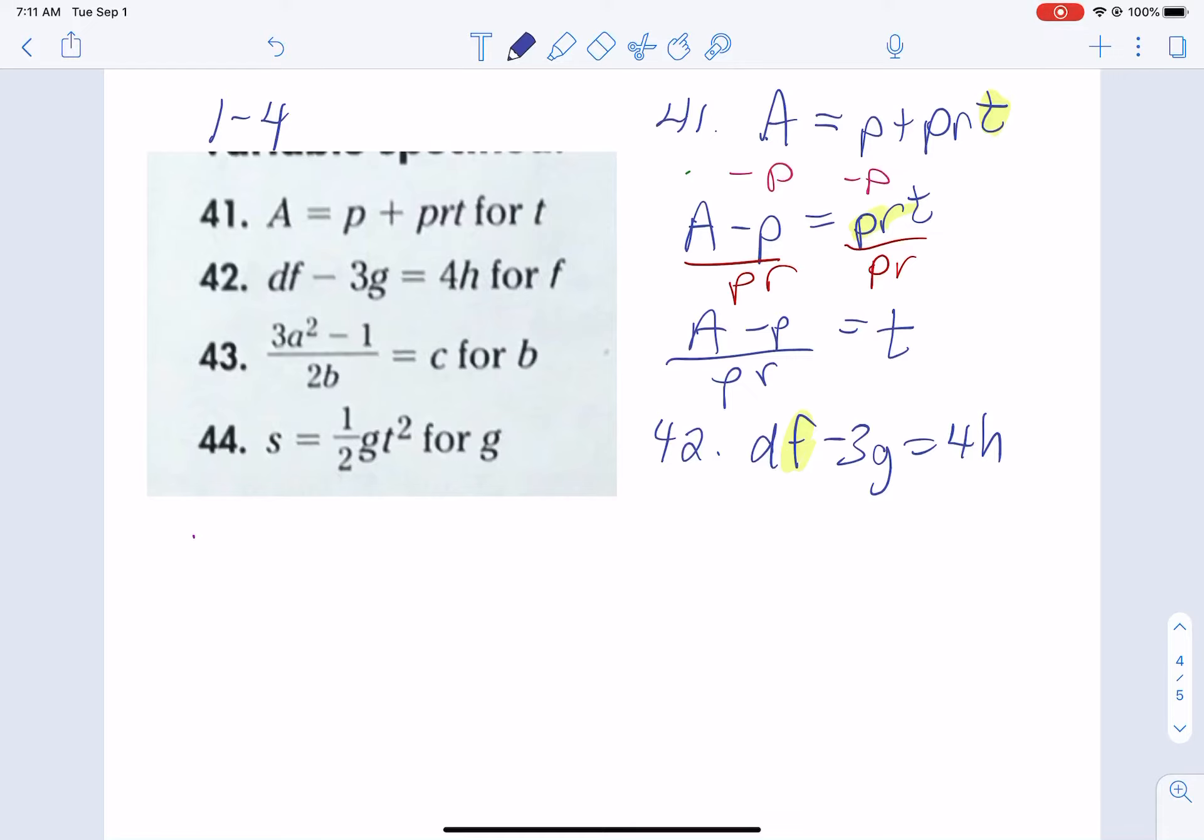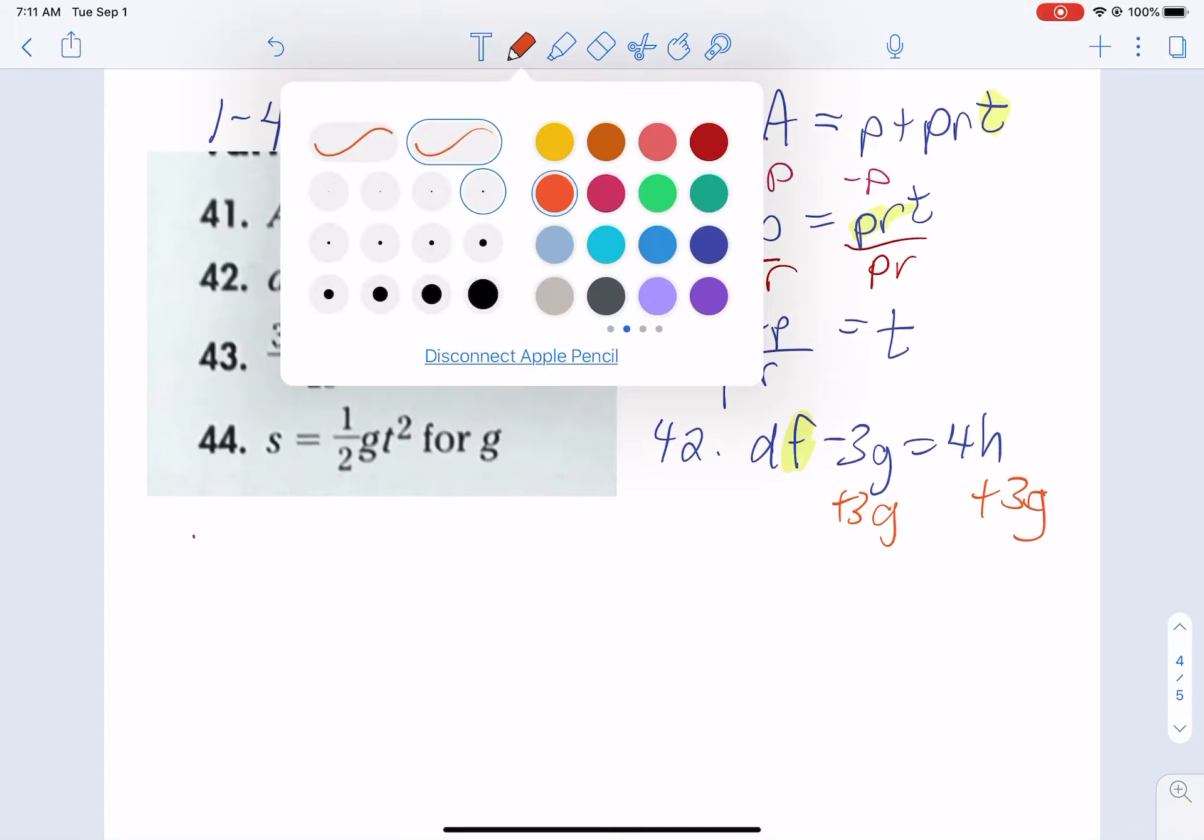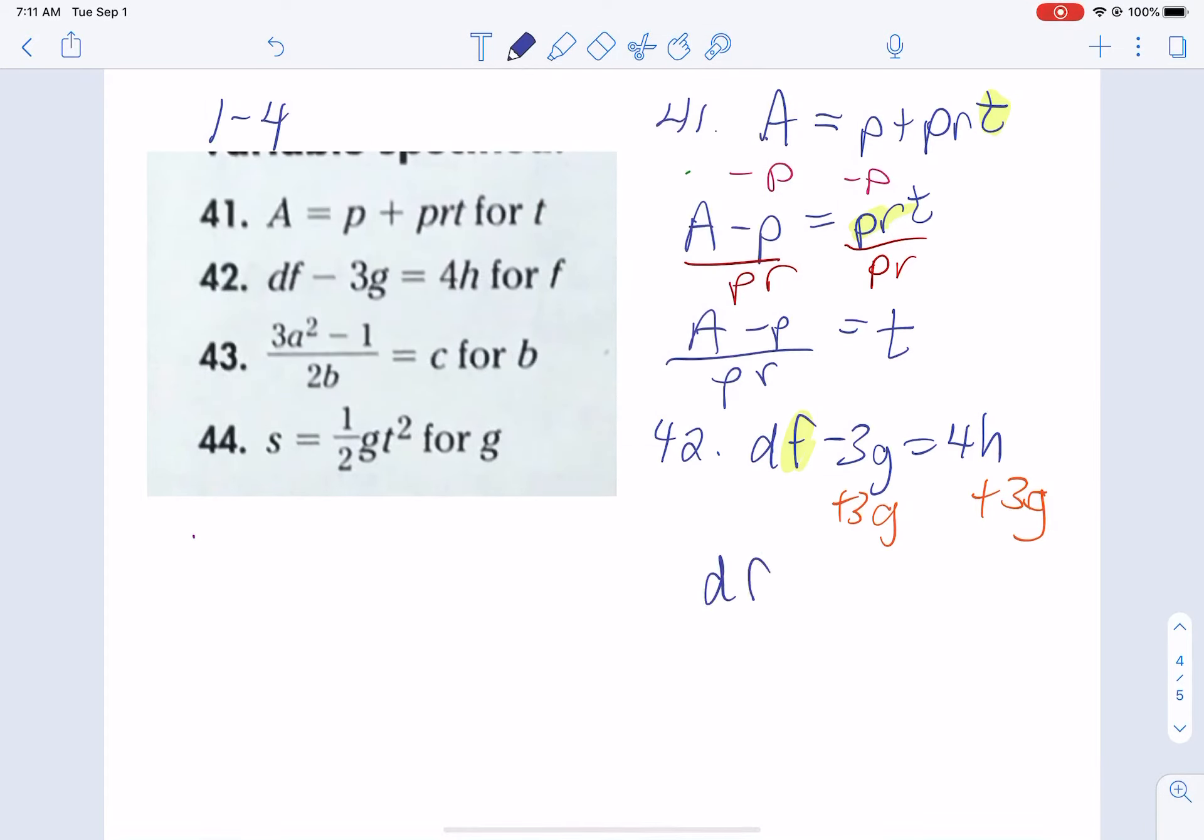So let's first add 3G's to both sides. We get DF equals 4H plus 3G.